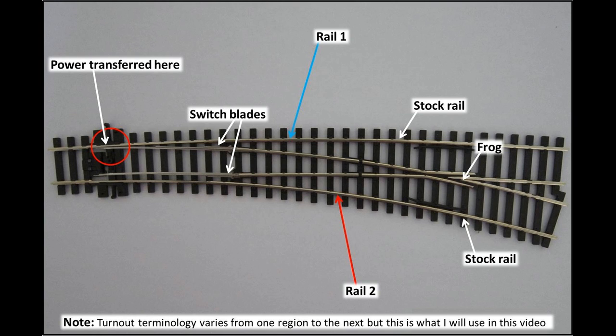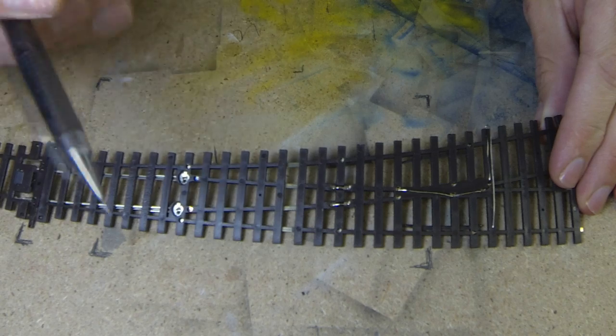Out the box, the turnout gets power to the switchblades by making contact with the stock rail. This power is transferred to the frog by two small wires under the turnout.